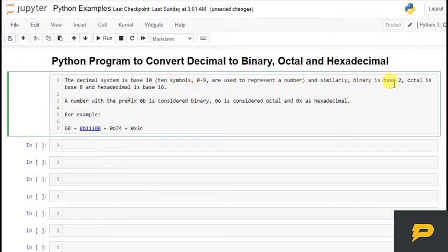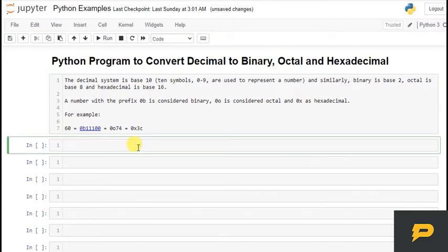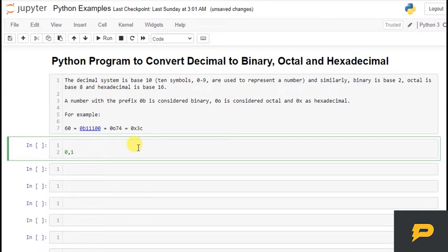Similarly, binary number has base 2, there are only two numbers in binary: 0 and 1. For decimal, we had 0, 1,